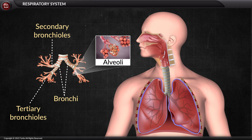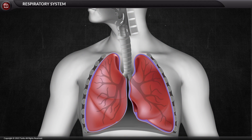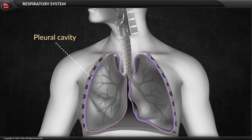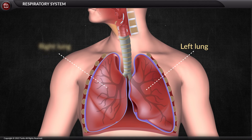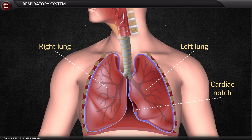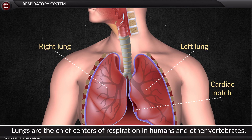The lungs are a pair of large, spongy organs found in the thorax. Each lung is surrounded by a pleural membrane that provides the lungs with space called a pleural cavity, which allows expansion. The pleural cavity is filled with pleural fluid, which gives protection to the lungs. The left and right lungs are slightly different in size and shape due to the heart pointing to the left side of the body. Lungs are the chief centers of respiration in humans and other vertebrates.